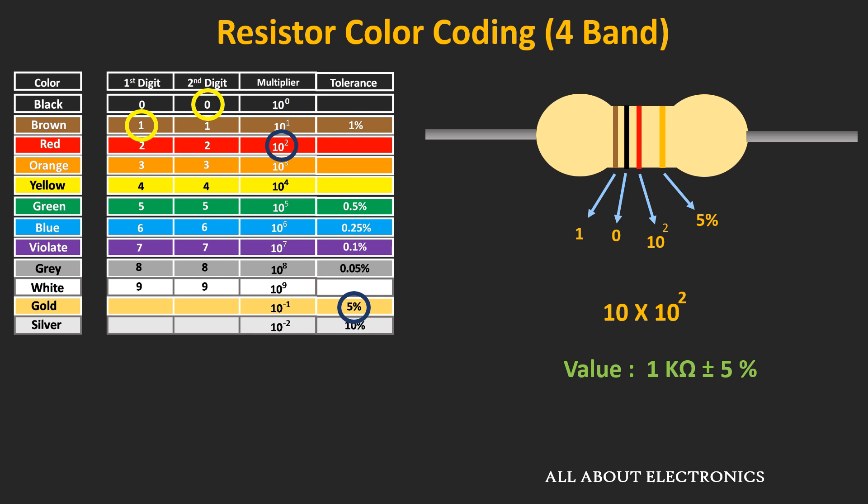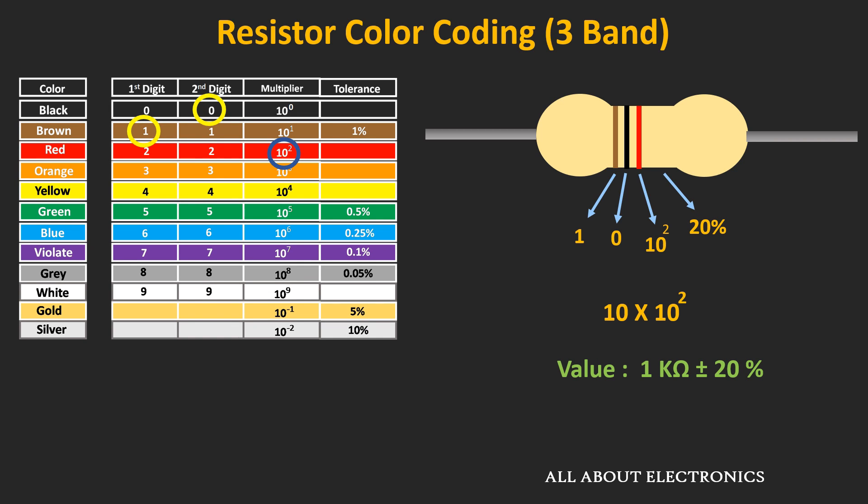Sometimes in a 4-band resistor, you might find that the fourth tolerance band is missing. In that case, it represents a tolerance value of 20%. For the given example, if the fourth band is missing, then the value of the resistor R will be 1 kΩ with a tolerance of 20%.